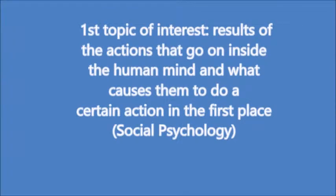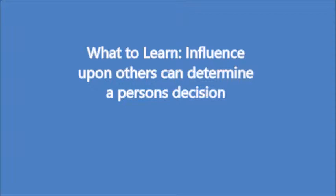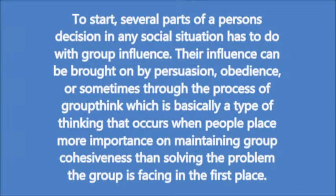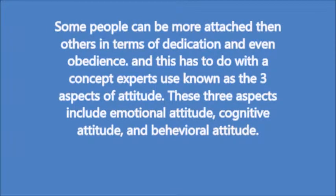First topic of interest: the results of the actions that go on inside the human mind and what causes them to do a certain action in the first place. Influence upon others can determine a person's decision. Several parts of a person's decision in any social situation has to do with group influence, brought on by persuasion, obedience, or sometimes the process of group thinking — basically a type of thinking that occurs when people place more importance on maintaining group cohesiveness than solving the group's problems. Some people can be more attached than others in terms of dedication and obedience, which relates to the three aspects of attitude.